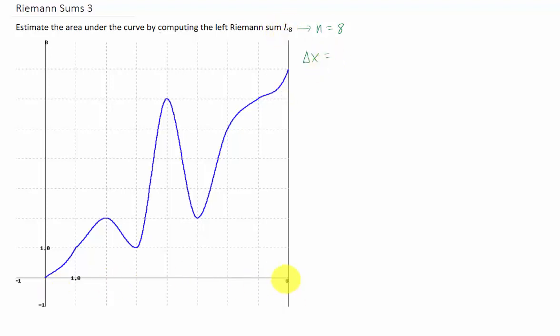Splitting the interval from 0 to 8 into 8 subintervals is pretty simple, but if you wanted to use the B minus A over N formula, you could and you would get that the length of each one of our subintervals is 1.